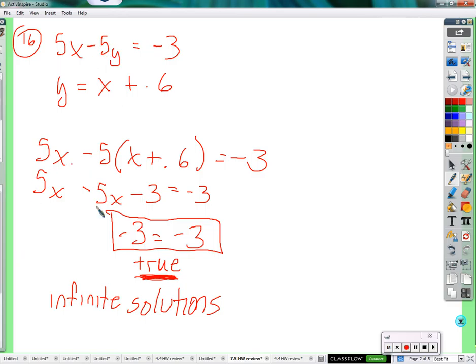No matter what I plug in for x, this part gets canceled out. And I'm left with negative 3 equals negative 3, which is true. So if you think about it this way, I can't mess it up. I can't mess up this equation by plugging in the wrong thing for x. I can plug absolutely anything for x that I want. Does that make sense? It will always work. It will always be a true equation.